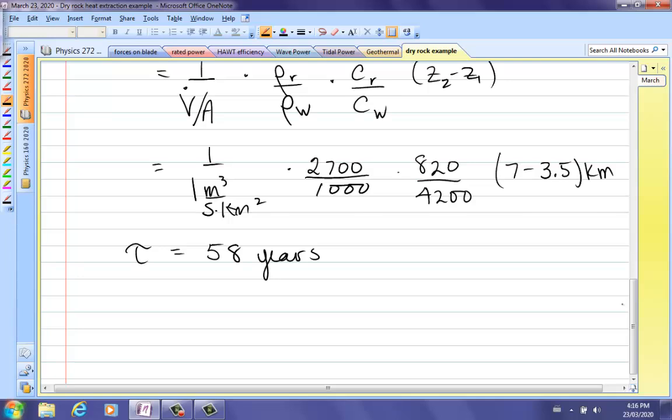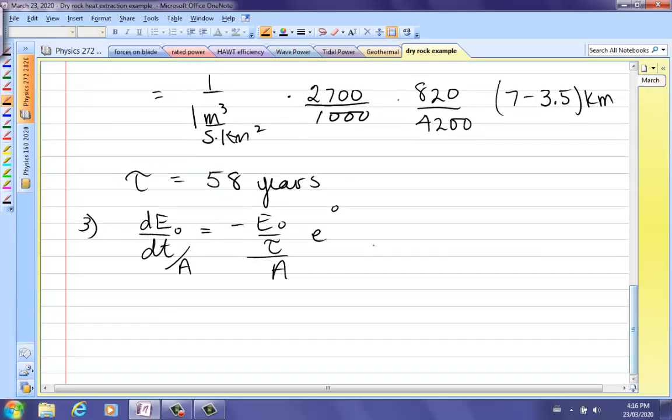Now, the useful rate of heat extraction initially. That's dE/dt at time zero, per square kilometer. So you have to divide that by A. So that's E0 over tau over A. E to the zero because time is zero. E to zero is just one.